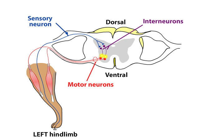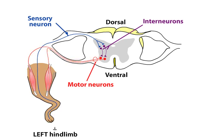Motor neurons are located in the ventral horn of the spinal cord and send their axons out the ventral root to innervate muscles. Some motor neurons innervate flexor muscles, while others innervate the extensor muscles.